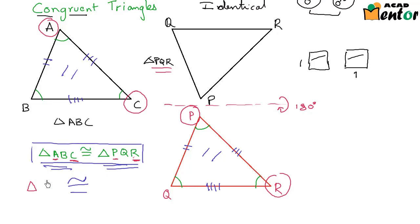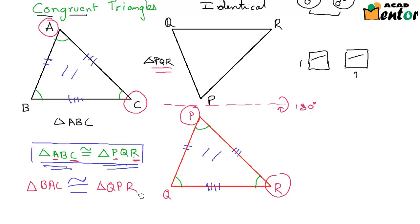If I had written this one as triangle BAC, then the name of triangle PQR would have been triangle QPR and not PQR, because B corresponds to Q and A corresponds to P.